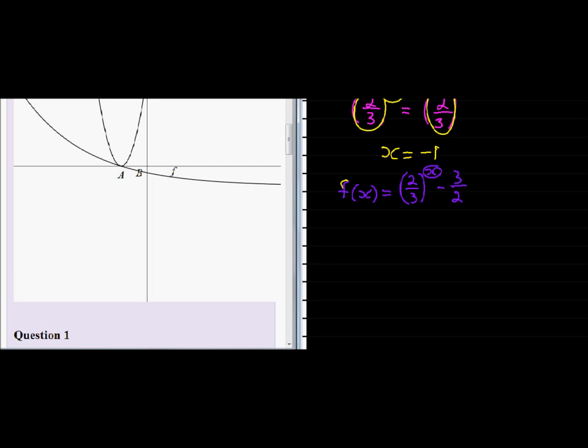In other words, what will be the y-value if x is 0? Well, any base with an exponent of 0 will be 1, minus 3 over 2. So we get the answer is negative 0.5.